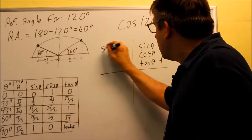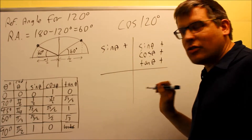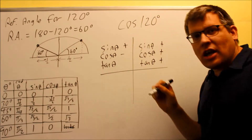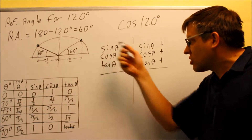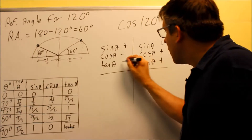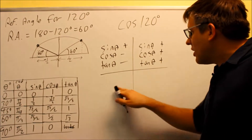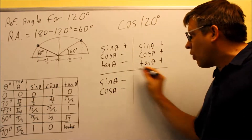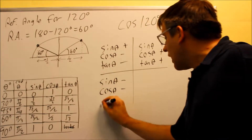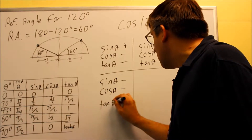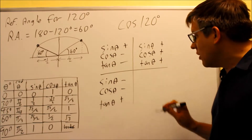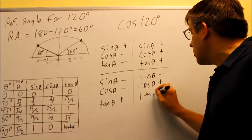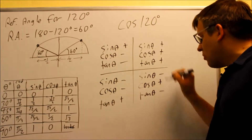If you're in the second quadrant, your y value — which is your sine — that's positive, but your cosine is going to be negative. And your tangent, because it's the same as y over x or sine over cosine, that's going to give you a negative as well. In the third quadrant, both sine and cosine are negative because both the y and x values are negative. However, tangent is going to be positive because it's sine over cosine. In the fourth quadrant, sine is negative, cosine is positive, and tangent is negative.